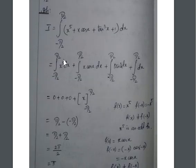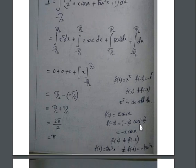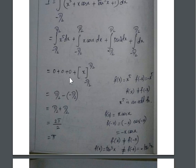For x⁵: f(−x) = (−x)⁵ = −x⁵, so it is an odd function — value is zero. For x·cosx: cos(−θ) = cosθ, giving f(−x) = −x·cosx = −f(x), odd function — value is zero. For tan³x: tan(−x) = −tanx, so f(−x) = −tan³x = −f(x), odd function — value is also zero.